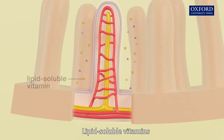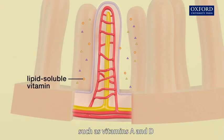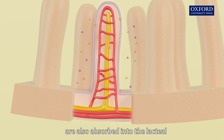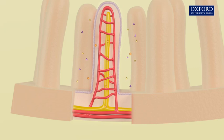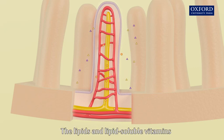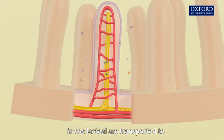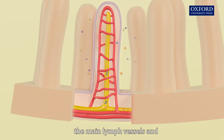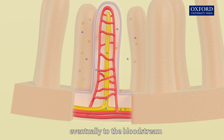Lipid-soluble vitamins such as vitamins A and D are also absorbed into the lacteal. The lipids and lipid-soluble vitamins in the lacteal are transported to the main lymph vessels and eventually to the bloodstream.